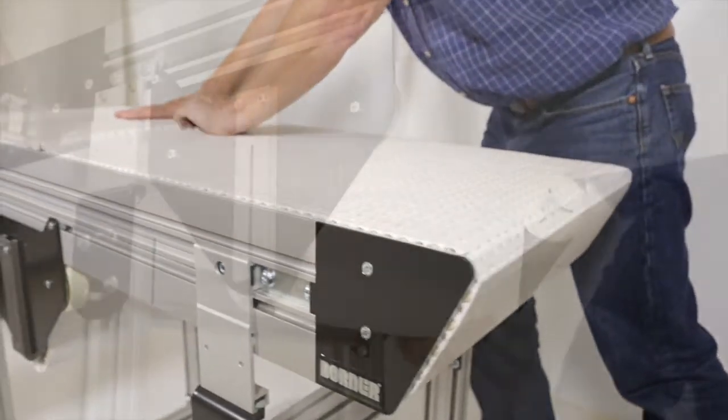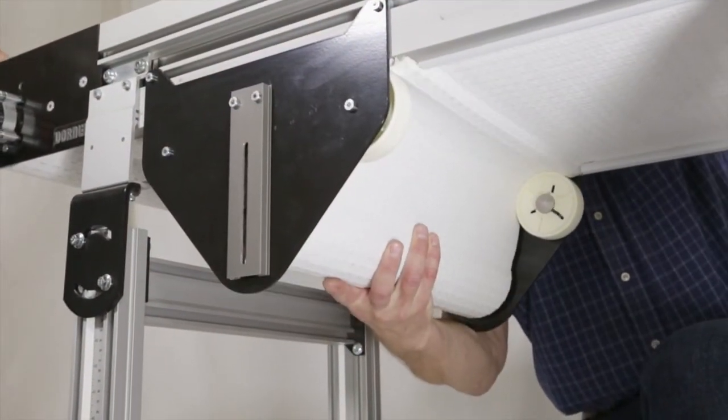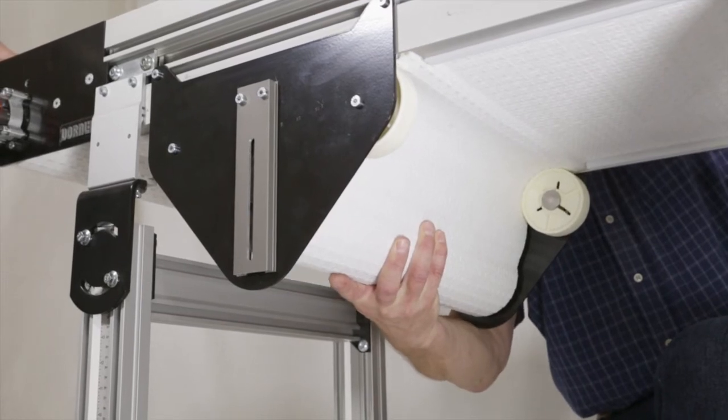To remove belt tension on conveyors with weighted take-ups, push up on the weighted shaft and remove unnecessary links.